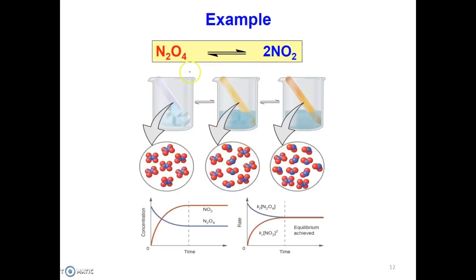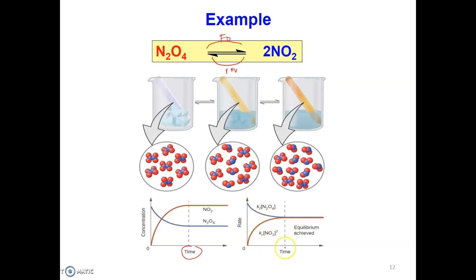Now we have a real reaction where N2O4 decomposes to form NO2 gas — this is the forward reaction — and the reverse reaction reforms N2O4. The graph shows how the concentration changes against time. The brown line represents the concentration of the product, which increases over time. At the point where the concentrations of N2O4 and NO2 become constant and do not change, the reaction has achieved equilibrium. On the rate-versus-time graph, when the rate of the forward reaction equals the rate of the reverse reaction, we say the reaction has achieved dynamic equilibrium.